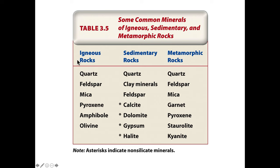Olivine only occurs in igneous rock for the same reason pyroxenes and amphiboles only occur in igneous rock — it's a high temperature mineral, so it weathers very rapidly at the low temperature conditions at the earth's surface. Minerals are most stable at the temperatures at which they form; if you change those conditions, you make them unstable. As far as sedimentary rocks are concerned, the presence of calcite is a good indicator of sedimentary rock. Dolomite is another good indicator, as are gypsum and halite.